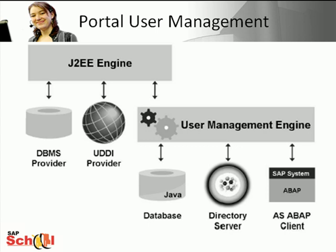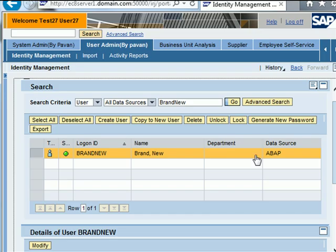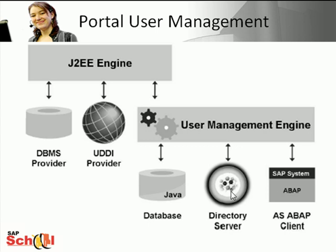The user management engine is installed as a user storage during the installation of the portal and application server Java, and this is normally the correct option for most SAP customers. The user concept and authorization concept can only be installed and operated flexibly on the basis of the UME storage data. The user management engine has a user interface called identity management to manage users, groups and roles — and this is the interface we used when we created our brand new users. The UME also supports various data sources: the system database (the Java database), the LDAP directory service, and the ABAP-based SAP system.